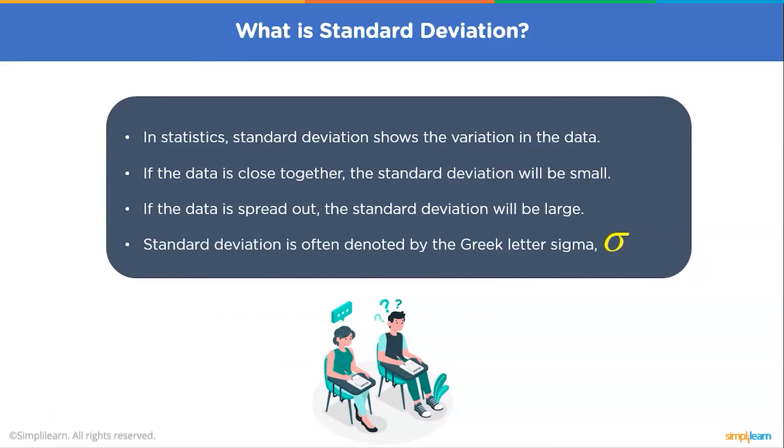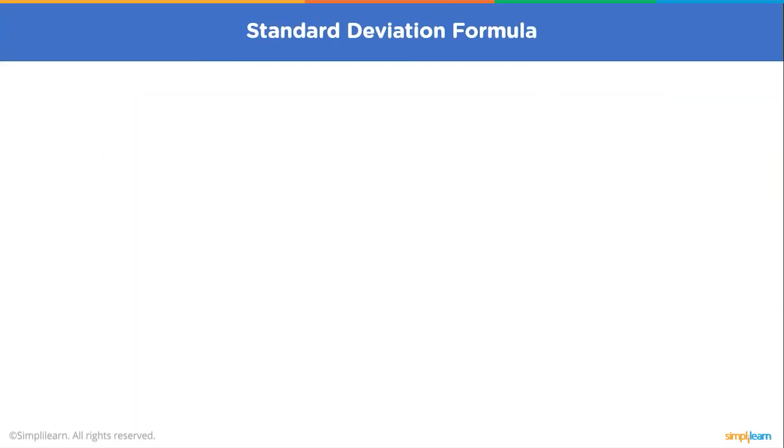While interpreting a bell curve, the points nearest to the center of the bell curve are those which are most likely to occur, whereas the points closest to the left and right edges are the outliers. Bell curves are used across a wide variety of disciplines including finance and economics, social science, and natural science. Standard deviation is often denoted by the Greek letter sigma.